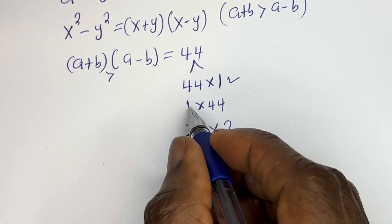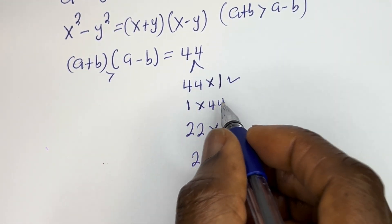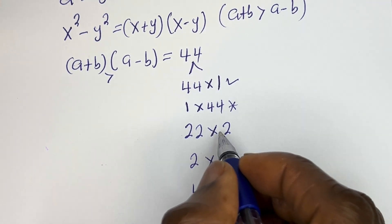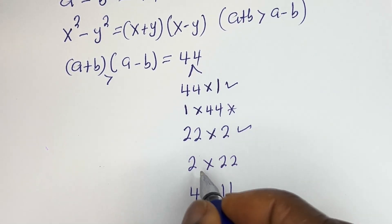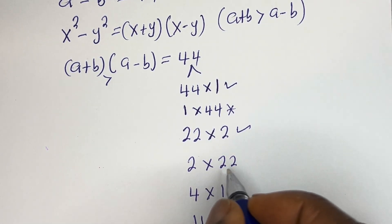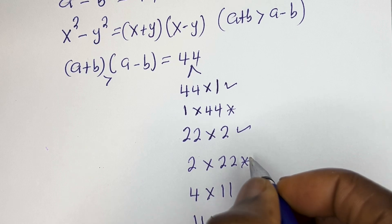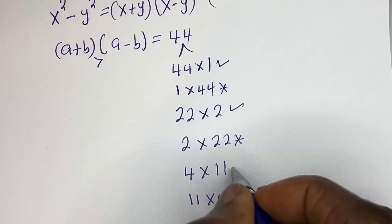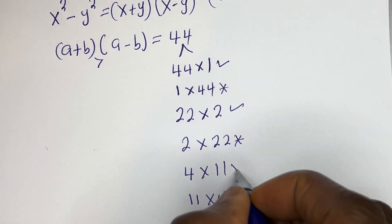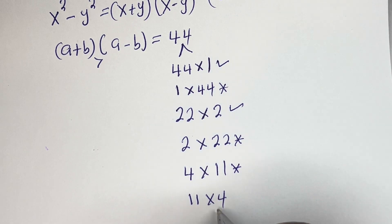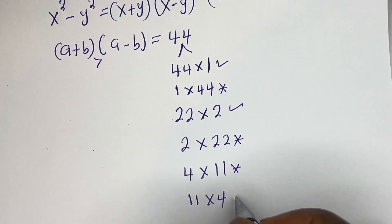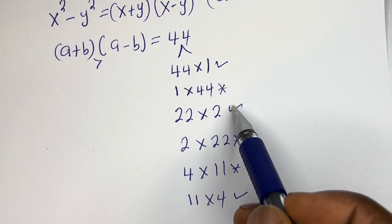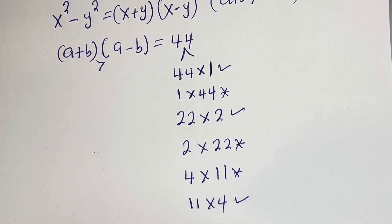1 is less than 44 — rejected. 22 is greater than 2 — accepted. 2 is less than 22 — rejected. 4 is less than 11 — rejected. 11 is greater than 4 — accepted. So we have three valid cases.